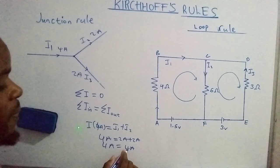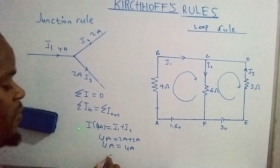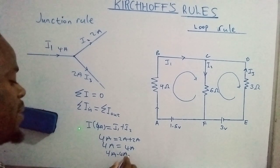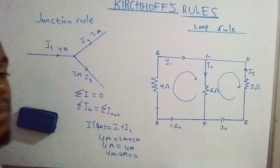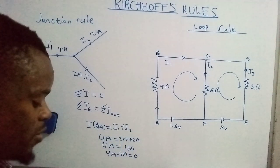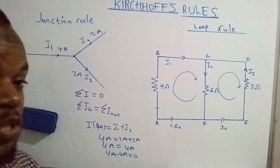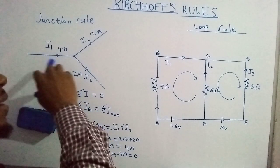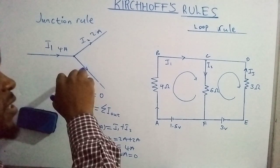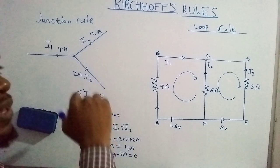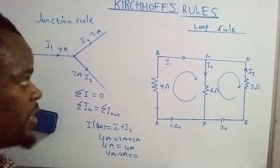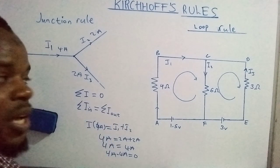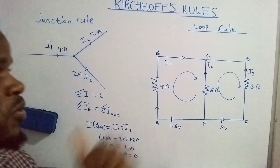Adding them algebraically, we move one term to the other side, giving us four amperes minus four amperes, which equals zero. This confirms the junction rule. Remember: the current into the junction equals the sum of the currents out of the junction. This rule is based on the conservation of energy.